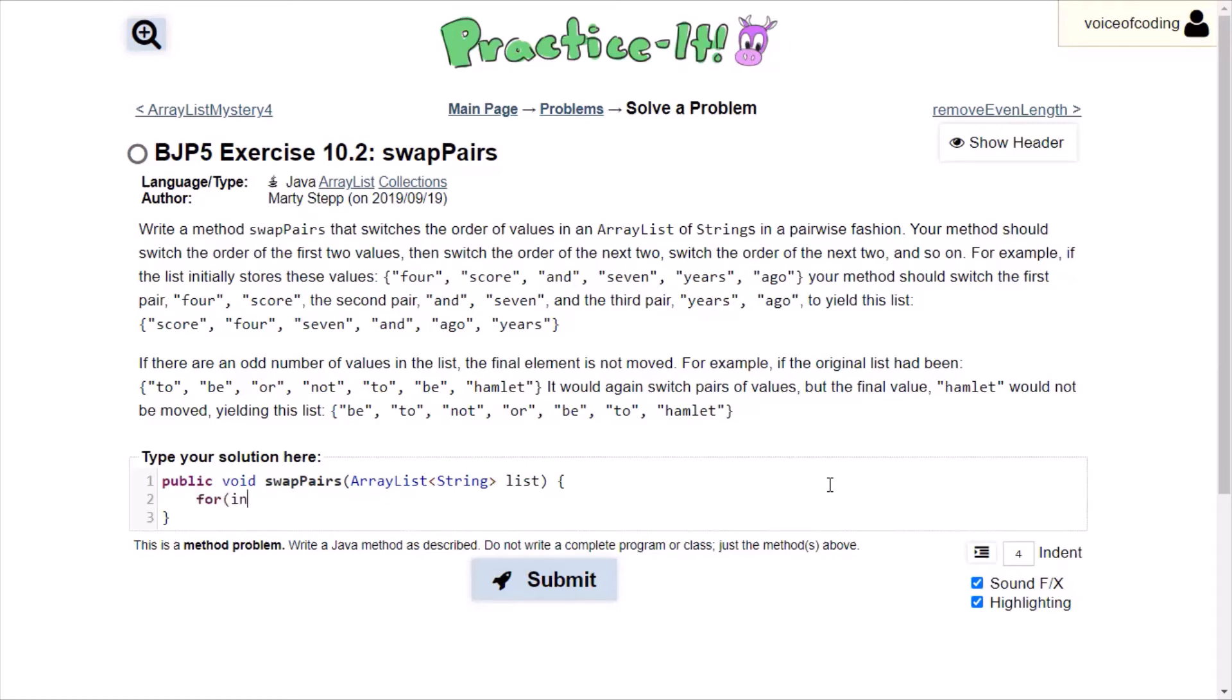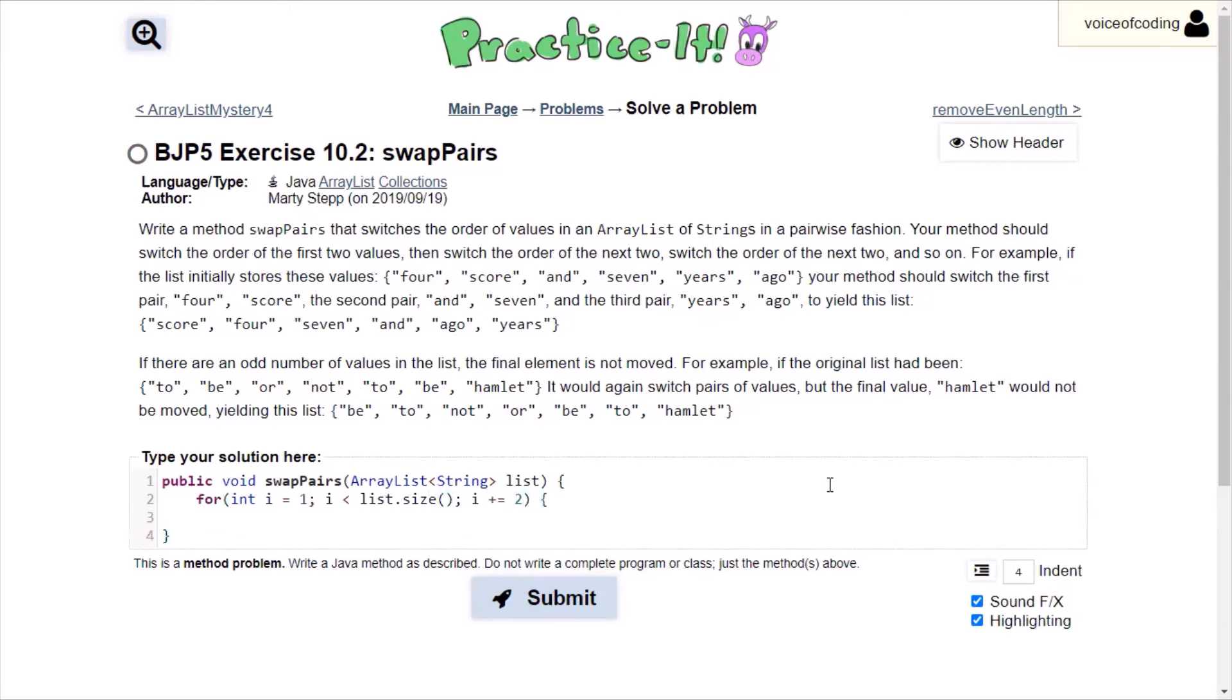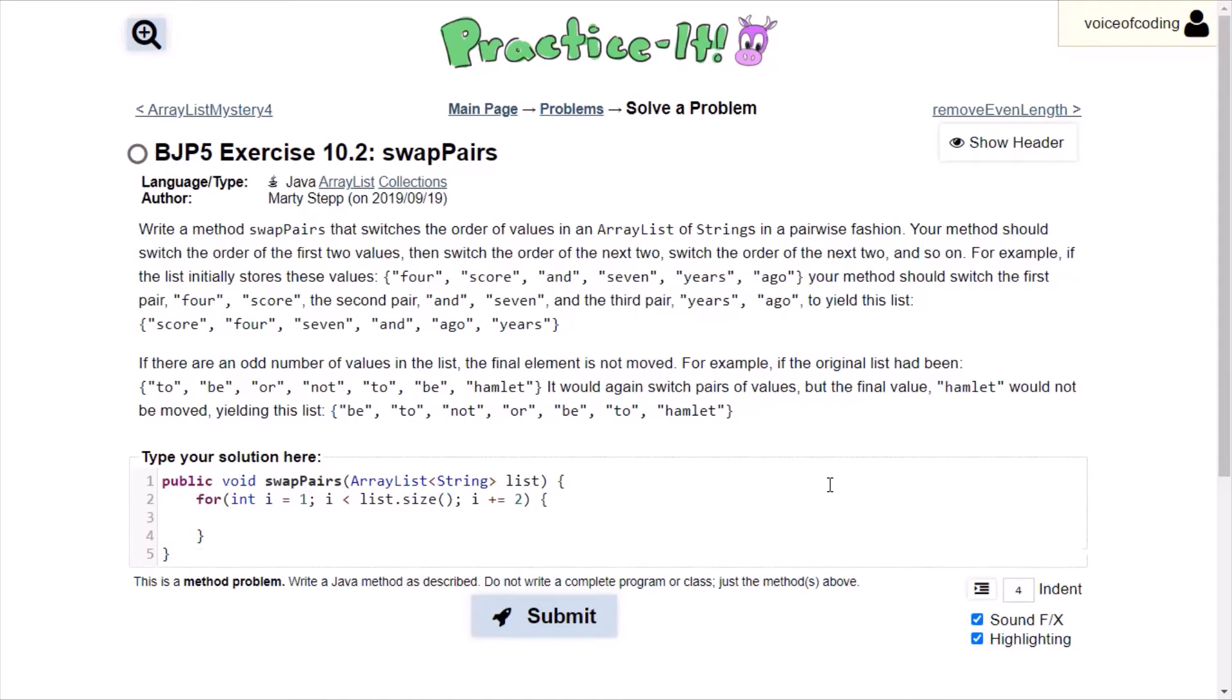We're going to start at for int i equals 1, not 0. And then i is less than list.size. And then i plus equals 2 because we're going by every two since we're swapping every two.